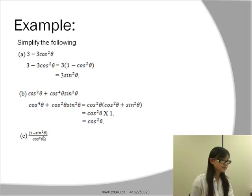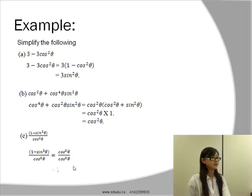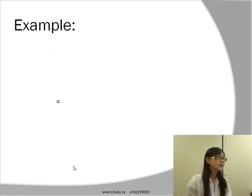Let's look at the last example: 1 minus sine squared over cos squared. 1 minus sine squared is the same thing as cos squared, so we would get cos squared over cos squared which is equal to 1 and that would be the final answer.